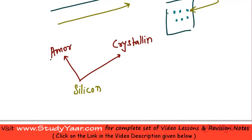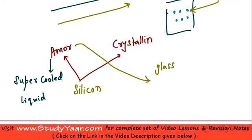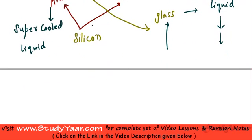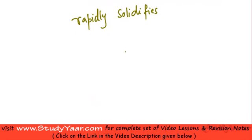Amorphous solids are also known as super-cooled liquids. An example of an amorphous solid is glass. If you heat glass it becomes a highly viscous liquid, and if this liquid is allowed to cool rapidly it crystallizes. Since it rapidly solidifies, the elements do not have enough time to arrange in the most favorable fashion, so they end up arranging themselves in a random fashion and hence become amorphous.